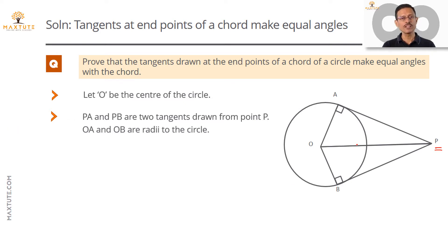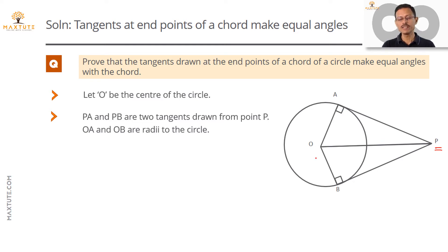A key property of circles states that where the tangent meets the circle — the point of tangency — the radius drawn at that point is at right angles to the tangent. This means angle OAP is equal to angle OBP, both equal to 90 degrees.